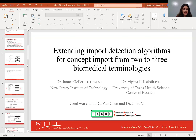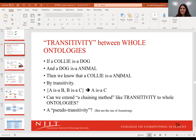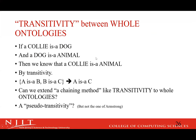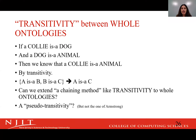Thank you, Dr. Geller. I don't think I can match that level of storytelling, but I'm also going to try to tell some stories. Our next idea was to combine both vertical and horizontal density differences. We have Armstrong's axioms for functional dependencies, which infer all functional dependencies in a relational database. We borrowed that transitivity property: if a collie is a dog and a dog is an animal, then we can infer that a collie is an animal. If A is a B and B is a C, then A is a C.